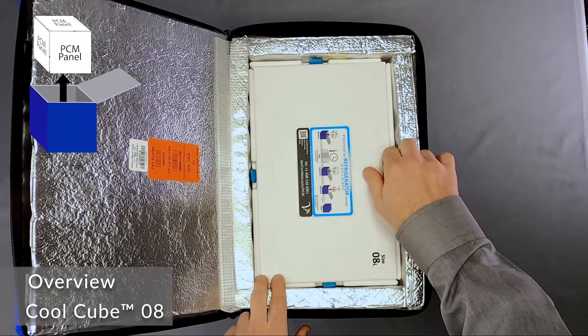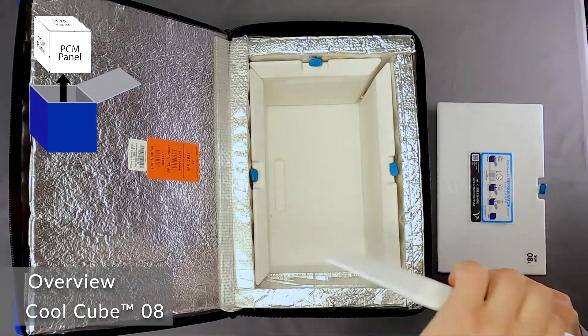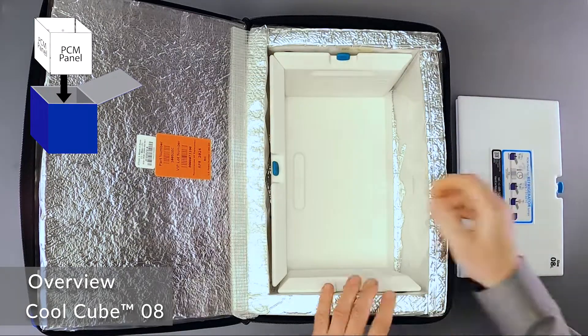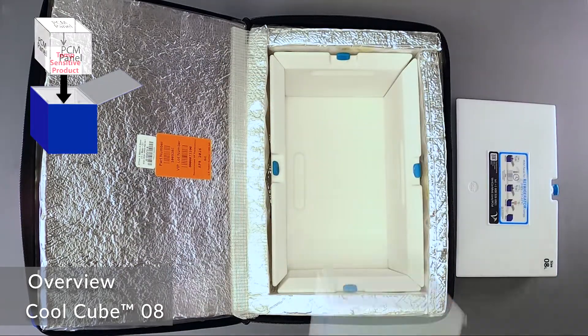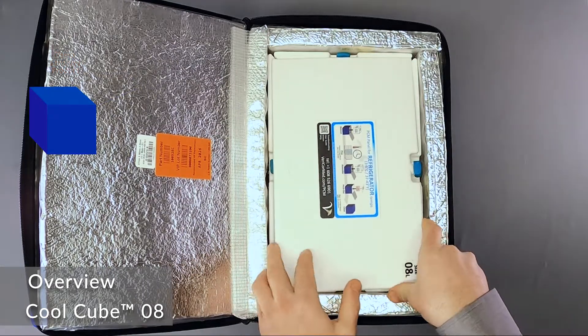There are five simple steps in using the CoolCube 08. Remove PCM panels, prep PCM panels, assemble PCM panels, pack out product, and close the case.